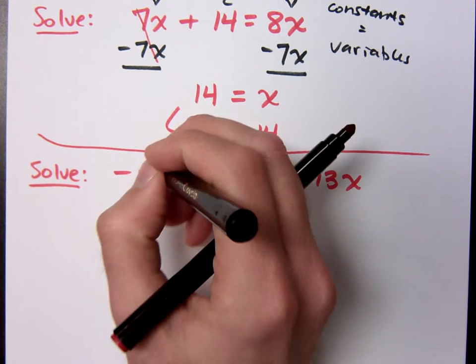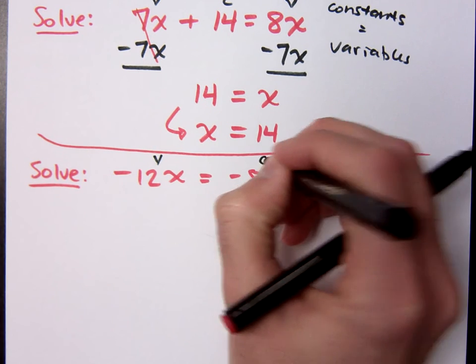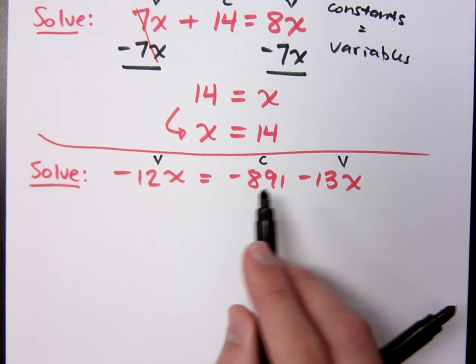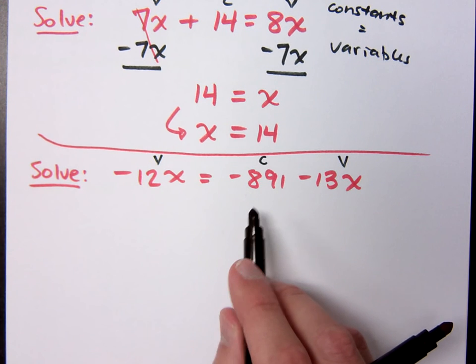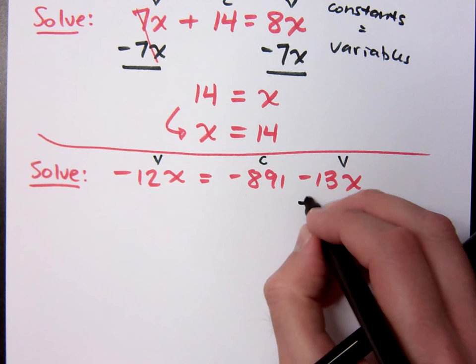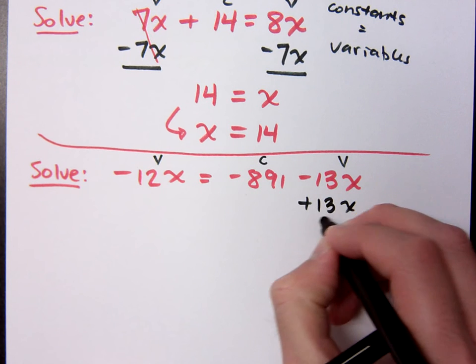But if I identify my terms, this is a variable, a constant, and a variable. Since this is the only constant term I have, let him have that side to himself. So what would you do? Add 13x. Add 13x to both sides.